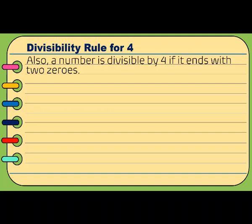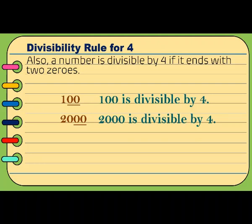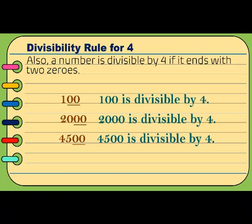A number is also divisible by 4 if it ends with 2 zeros. For example, 100 ends with 2 zeros — it is divisible by 4. Another example, 2,000 ends with 2 zeros, so 2,000 is divisible by 4. Another one is 4,500 — it ends with 2 zeros, so 4,500 is also divisible by 4.